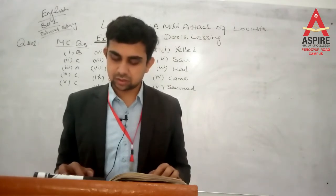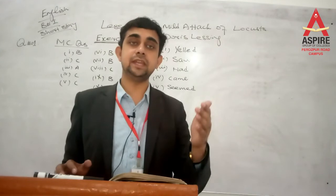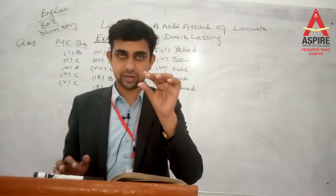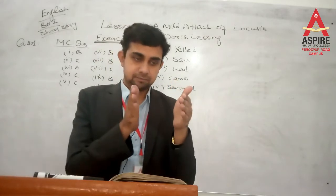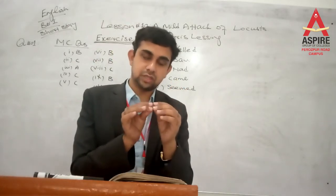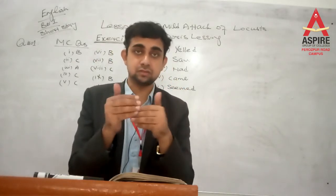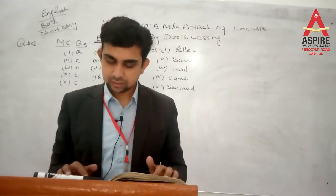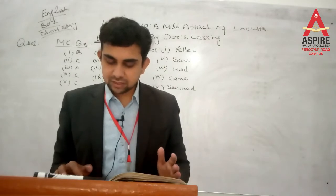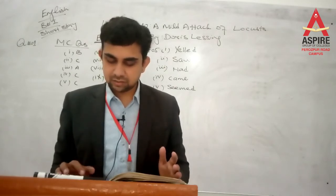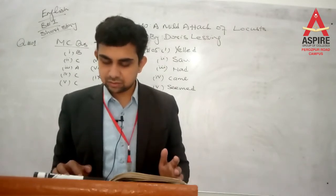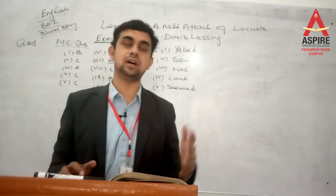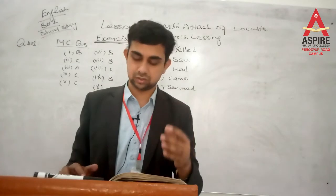Question: Are the hoppers different from the locusts? Hoppers are the young locusts — یہ جوان/چھوٹی ٹڈیاں ہوتی ہیں — while the locusts are full-grown insects. Hoppers are the larvae or offspring of locusts. So hoppers are small and young, while locusts are fully grown — اتنا سا فرق ہے.